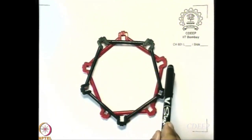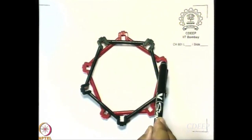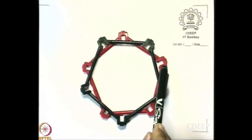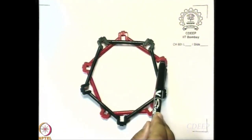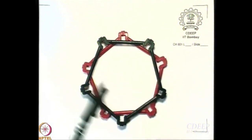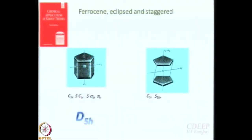Rotate by 36 degrees — it is going to come here but will be at the top. Now if you reflect with respect to the non-existent horizontal plane, then you reach this red point. You can work that out for each and every carbon atom. So C5 now becomes S10 also — C5, S10.